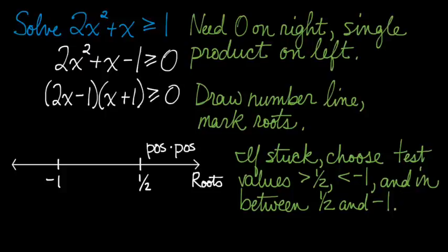Now, to the right of 1 half, for numbers greater than 1 half, I know that both my linear factors are going to be positive, so I get positive times positive, which is a positive number.